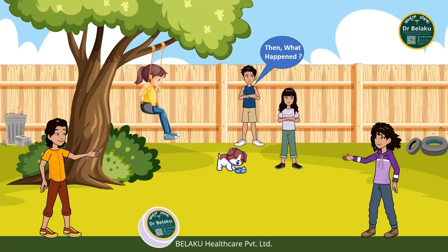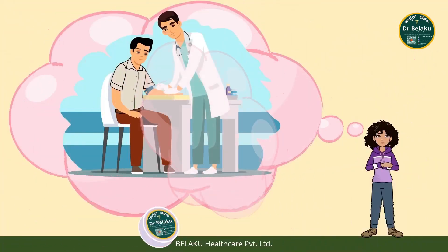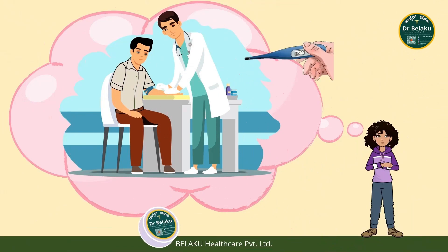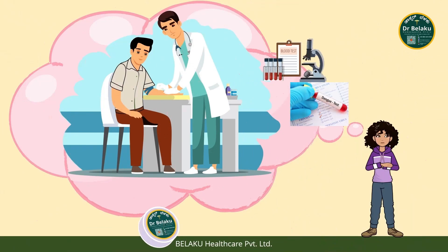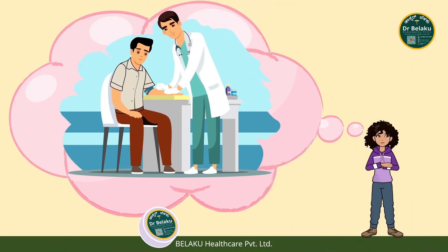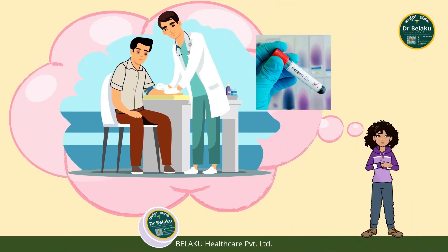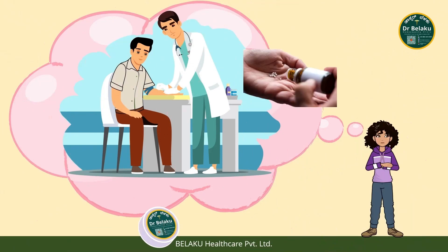Then what happened? My father went to see the doctor at the clinic. The doctor checked his temperature, pulse and BP, and asked for some blood tests. The doctor checked his blood report and confirmed that my father was suffering from dengue. With the help of homeopathic medicines, he recovered in a week's time.